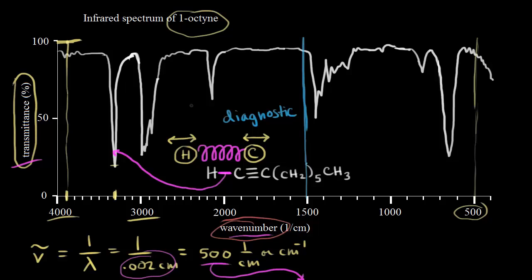For example, this signal at approximately 2,100 wave numbers corresponds to the triple bond present in the molecule. This tells us that a specific functional group — the triple bond — is present. It's diagnostic; it helps you figure out the structure of the molecule. You can figure out different functional groups present in molecules using IR spectra.